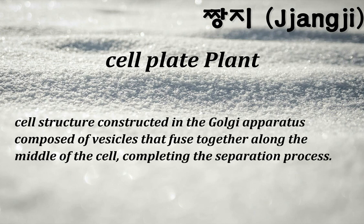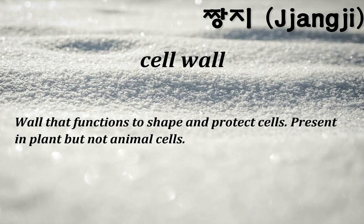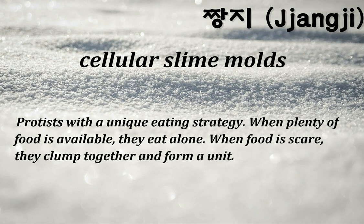Cell plate: a plant cell structure constructed in the Golgi apparatus, composed of vesicles that fuse together along the middle of the cell, completing the separation process. Cell wall: a wall that functions to shape and protect cells; present in plant but not animal cells. Cellular slime molds: protists with a unique eating strategy — when plenty of food is available they eat alone, but when food is scarce they clump together and form a unit.